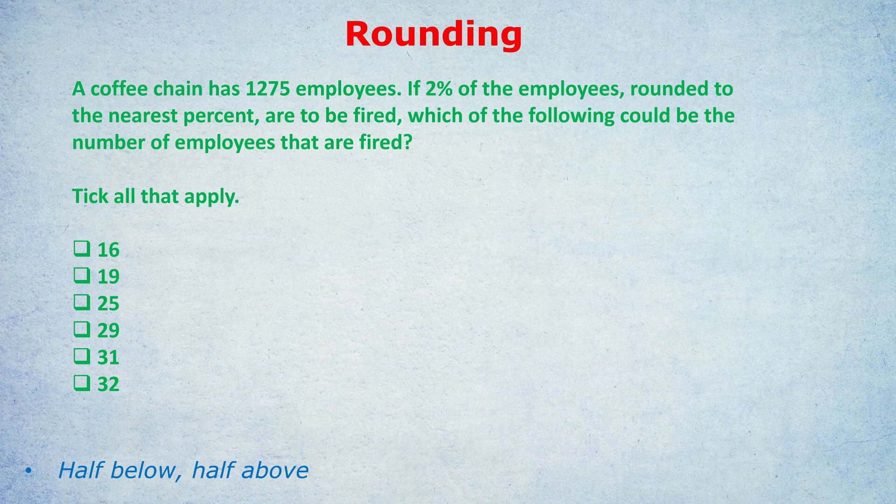A coffee chain has 1,275 employees. If 2% of the employees, rounded to the nearest percent, are to be fired, which of the following could be the number of employees that are fired?